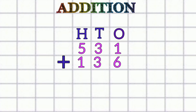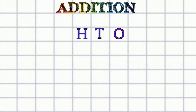Next example: 531 plus 136. First the ones place: one plus six equals seven. Then the tens place: three plus three equals six. Then the hundreds place: five plus one equals six. So our answer is six hundred sixty-seven.